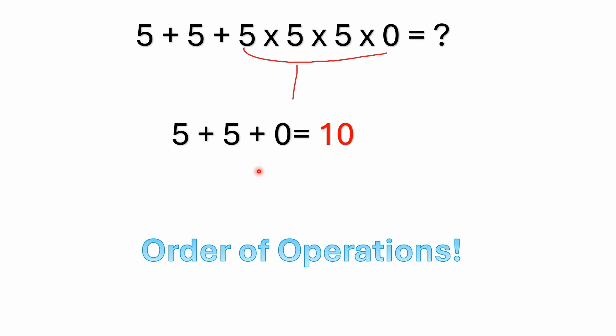Just remember, we don't go left to right. It's not 5 plus 5 is 10, 10 plus 5 is 15, and then 15 times 5, and then taking that times 5. We don't work it that way. We do the multiplication first. So it's 5 plus 5 plus 0 equals 10.